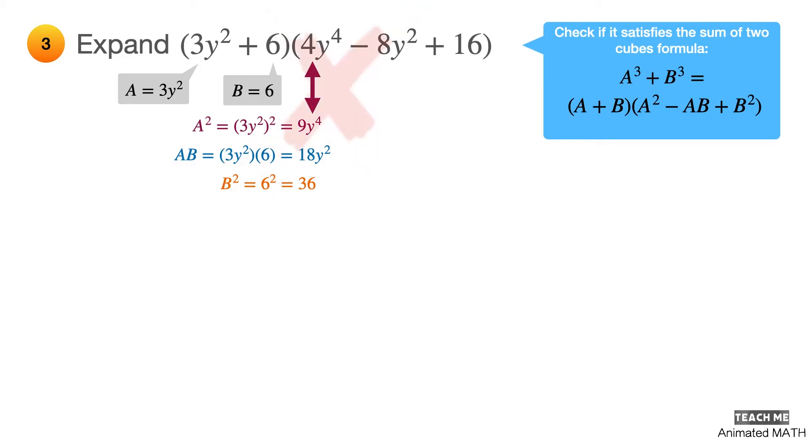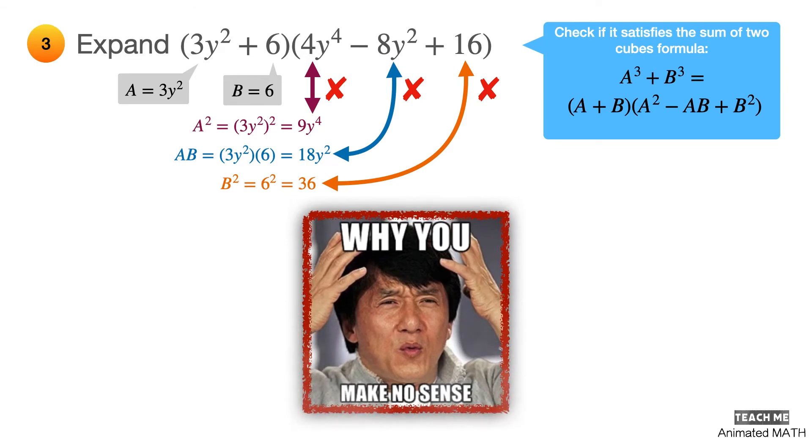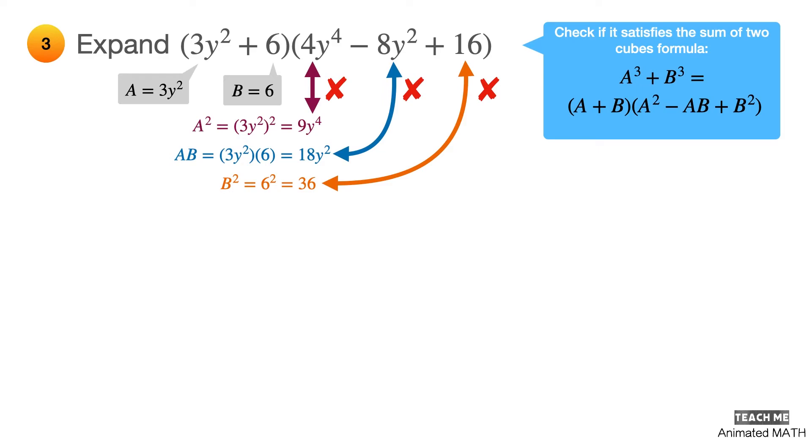a squared is NOT equal to 4y raised to 4. However, ab is NOT equal to 8y squared, and b squared is NOT equal to 16. Does this mean that the sum of two cubes formula cannot be applied in this example? Actually, the formula is applicable, but the wrong values were used for a and b.